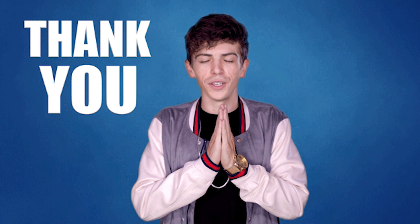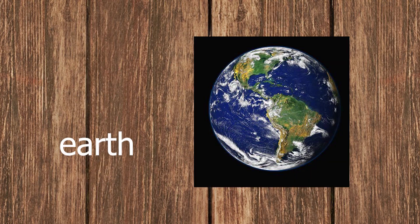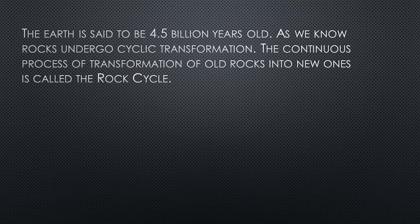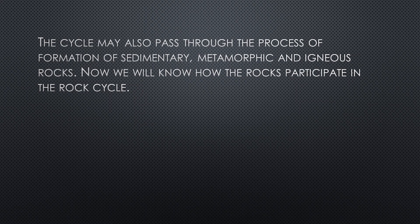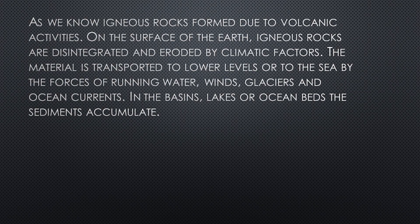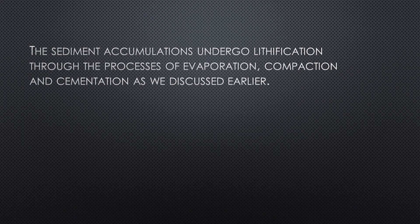Thank you for giving me your time to explain about the economic significance of rocks. Now my friend Nikhil B from 9A will be explaining about the rock cycle. Hi everyone, I am Nikhil B. The rock cycle keeps our planet earth young. The earth is said to be 4.5 billion years old. Rocks undergo a cyclic transformation — the continuous process of transformation of old rocks into new ones is called the rock cycle. The cycle may pass through the formation of sedimentary, metamorphic, and igneous rocks. Igneous rocks form due to volcanic activities on the surface of the earth, and are then disintegrated and eroded by climatic factors. The material is transported to lower levels of the sea by running water, wind, glacier, and ocean currents. Sediment accumulates in the bases of lakes or ocean beds and undergoes lithification through the processes of compaction and cementation.